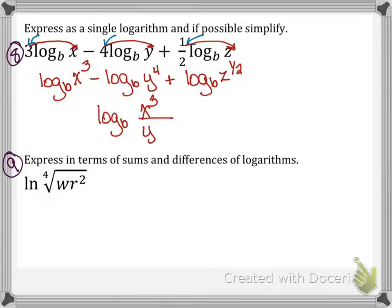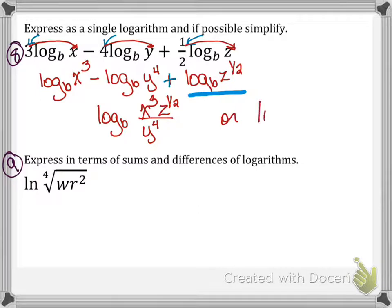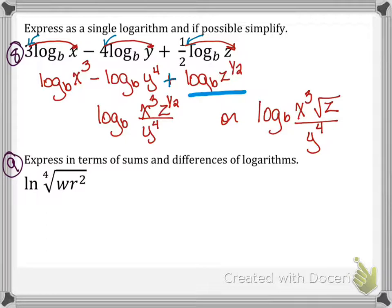Now moving to a single logarithm: x³ goes in the numerator. Because I am subtracting log_b(y⁴), y⁴ goes in the denominator — that's the quotient rule. Students sometimes think the last term also goes in the denominator, but it's being added, so z^(1/2) stays in the numerator. I would accept z^(1/2) or the square root of z as the final answer.